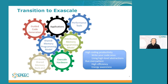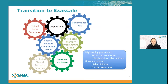This is how we plan to transition into exascale. Our motto is high coding productivity: write your code once using high-level abstractions and deploy it everywhere with high efficiency and energy awareness. We have a shared memory programming model, and users will be able to select either a distributed memory programming model to go distributed manually, or a distributed shared memory backend so that it does the distribution automatically.